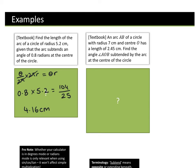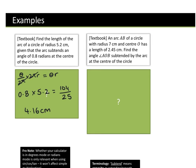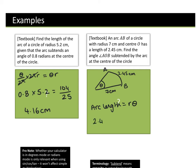Next question: An arc AB of a circle with radius 7 and centre O has a length of 2.45 cm. Find the angle AOB subtended by the arc at the centre. I always recommend drawing a picture. I know my radius is 7, my arc length is 2.45. Arc length = r × theta, so 2.45 = 7 × theta. Rearranging: theta = 2.45 ÷ 7 = 7/20 = 0.35 rad.